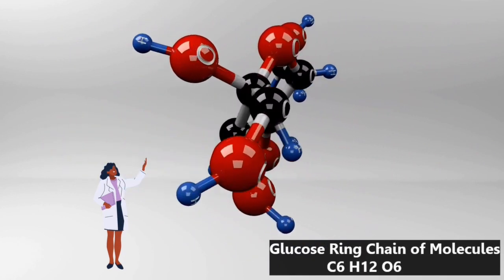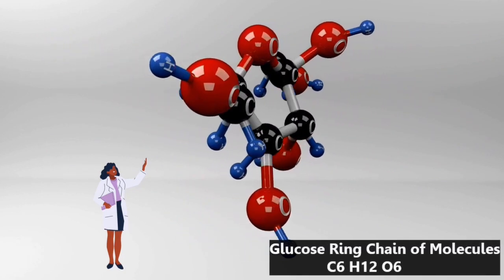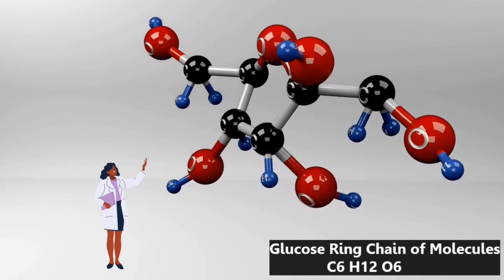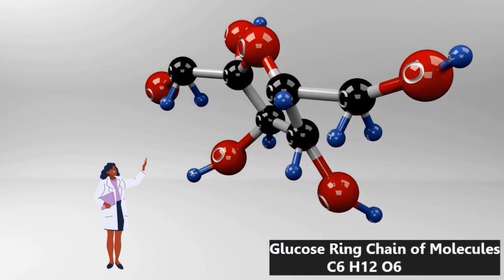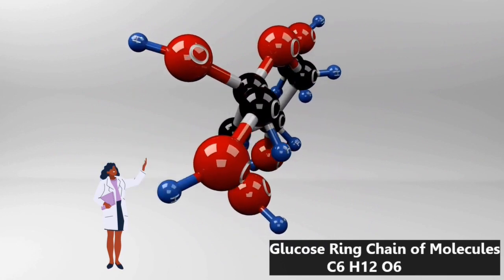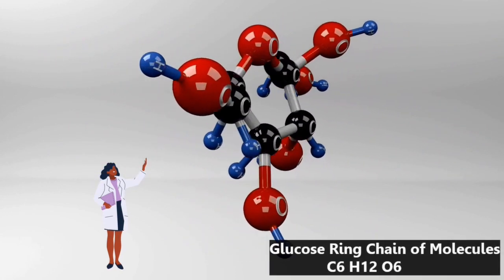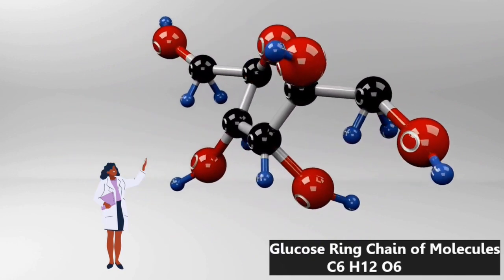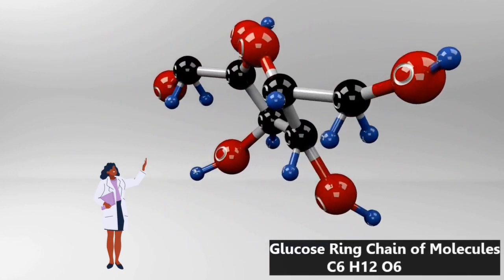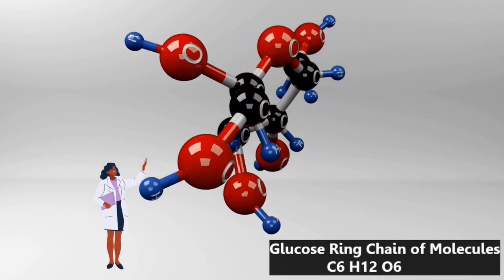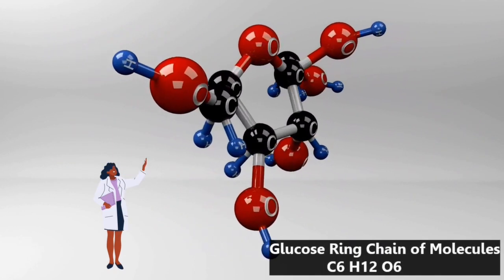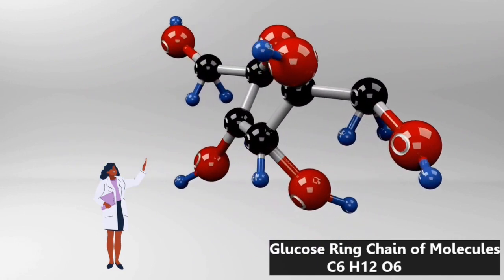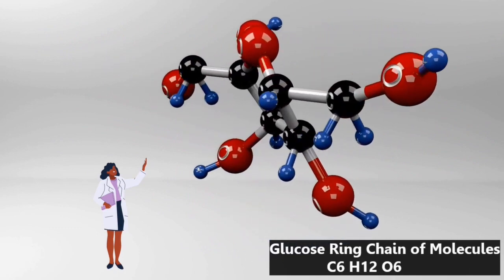Further, the oxygen is attached to hydrogen, which forms a hydroxyl group, represented by blue balls, which are 12 in number. Together, all of these form the glucose ring chain molecule: C6 — the six carbons, H12 — represented by the blue balls, and O6 — represented by the oxygen.